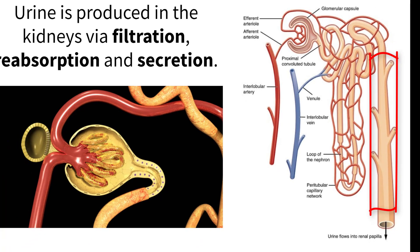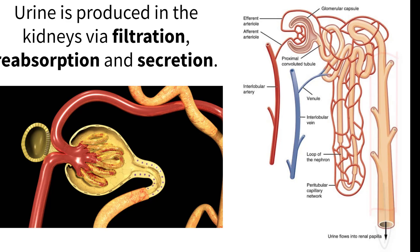The collecting duct connects and leads the waste, which is now urine, out to the ureter. While the filtrate is moving through the convoluted tubules and loop of Henle, the blood that was filtered in the renal corpuscle gets pushed out the efferent arterial.